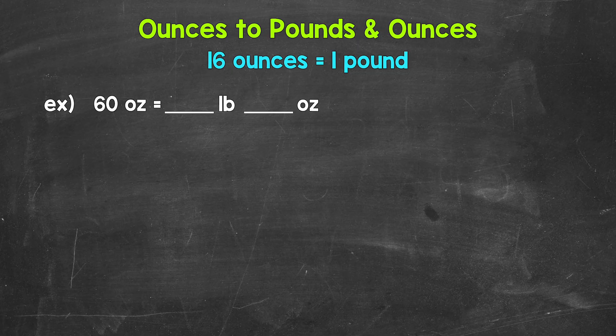So really, we're going to go from ounces to pounds and ounces. We will have mixed units here. Now remember, 16 ounces equals one pound. So when we convert from ounces to pounds, we divide by 16.